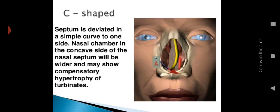C-shaped deformity means the septum is deviated in a simple curve to one side. The nasal chamber on the concave side of the nasal septum will be wider and may show compensatory hypertrophy of the turbinate. So one side you can see is wider and the other side is very congested.